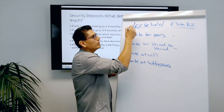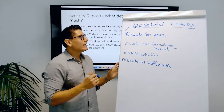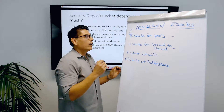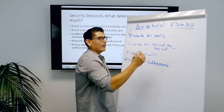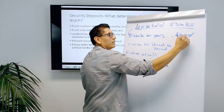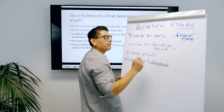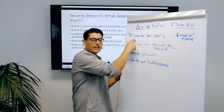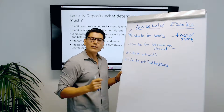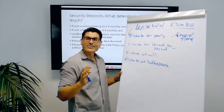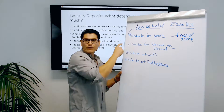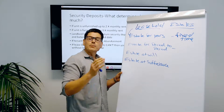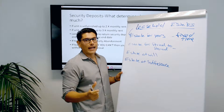Under leasehold estates, the first type to know is estate for years. The estate for years is for a fixed time. So if you lease a property for four months, it's still an estate for years. If you lease a property for six years, it's still an estate for years. What makes an estate for years is that it's a fixed amount of time — meaning there's a beginning and an end.